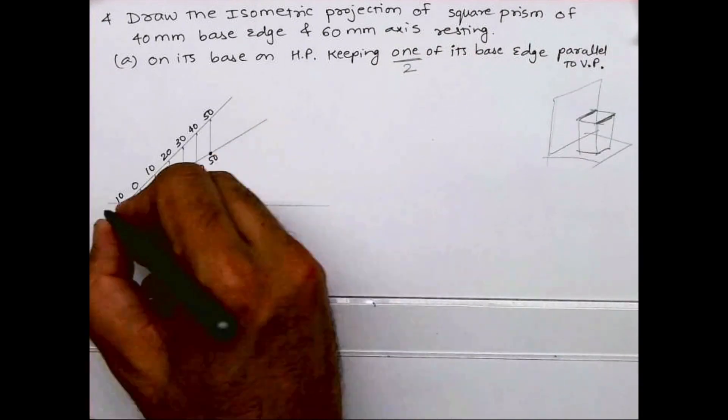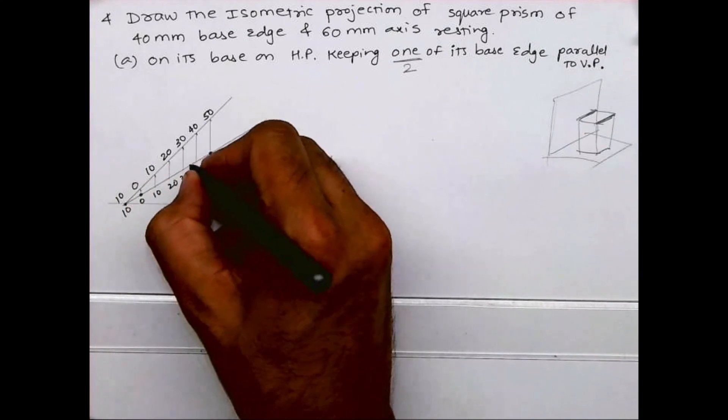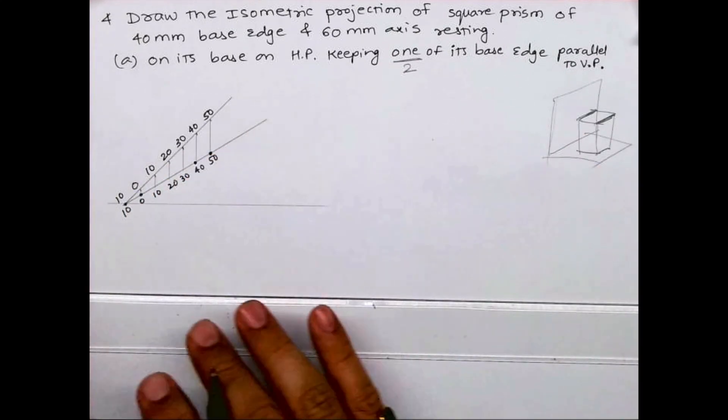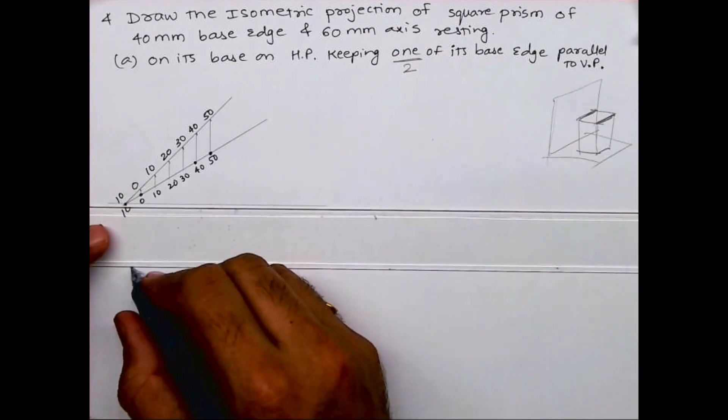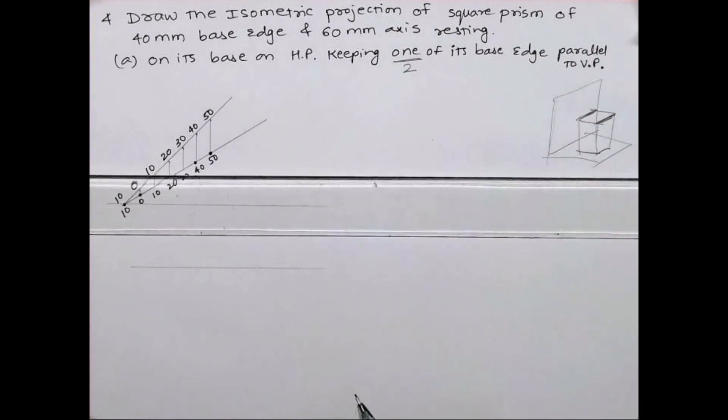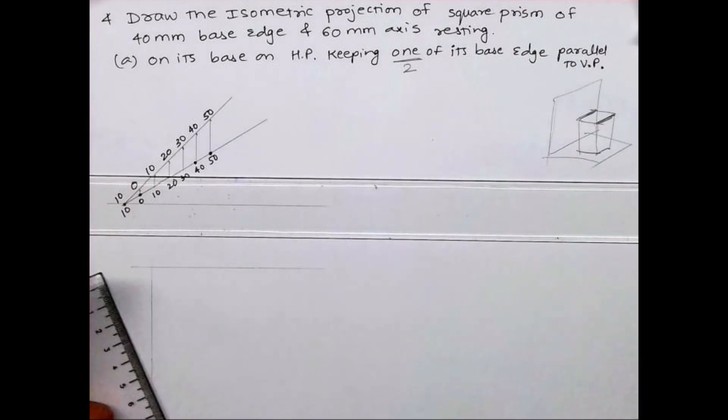From here to here will be 60, and from 0 to 40 is 40. Always remember, take the dimension which is there on 30 degree. It will always be less. Whenever you're doing isometric projection, it will be always less than the original dimension.